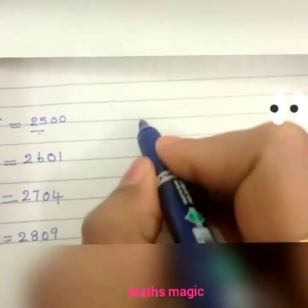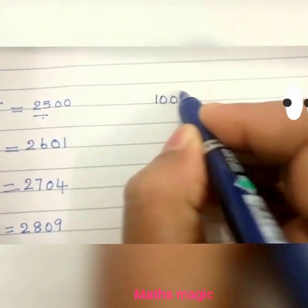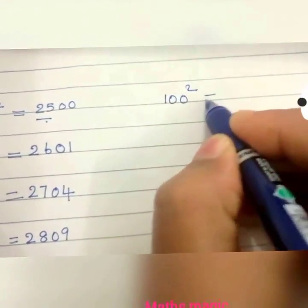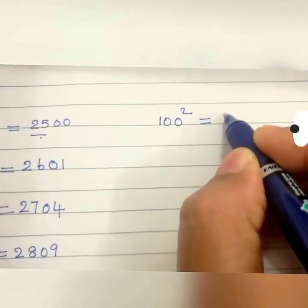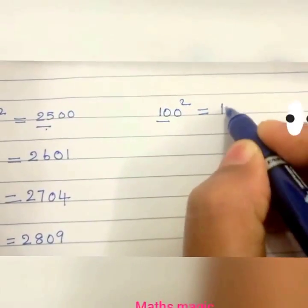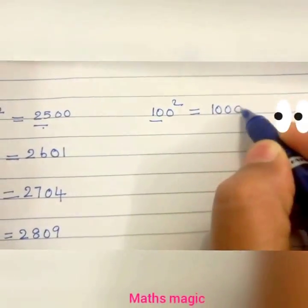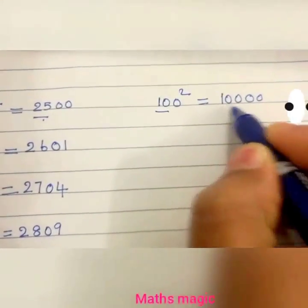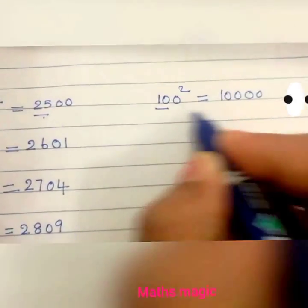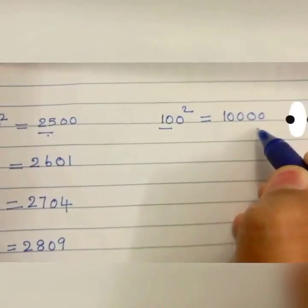Now let us consider 100 squared. We know 10 squared is 100 followed by two zeros, so 100 squared is 10,000. In the same way, 50 squared is 2500 and 100 squared is 10,000.